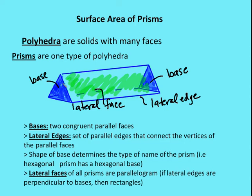A triangular base means a triangular prism; a hexagonal base makes it a hexagonal prism. The lateral faces are parallelograms, and sometimes they're rectangles if the lateral edges are perpendicular to the bases — meaning the base edges and lateral edges form right angles, giving three congruent rectangles for the lateral faces. So we have bases, base edges, lateral faces in green, and lateral edges in blue.